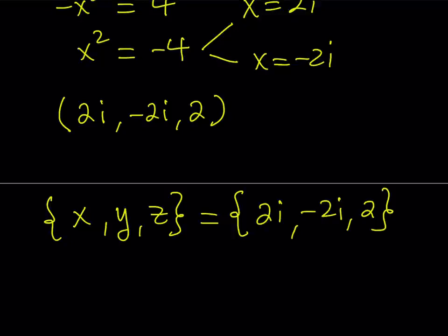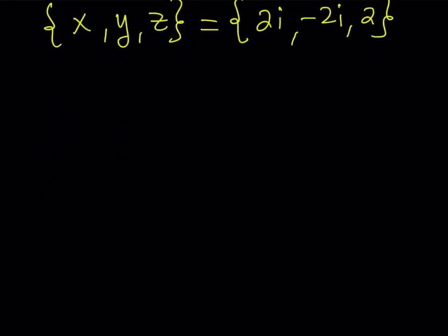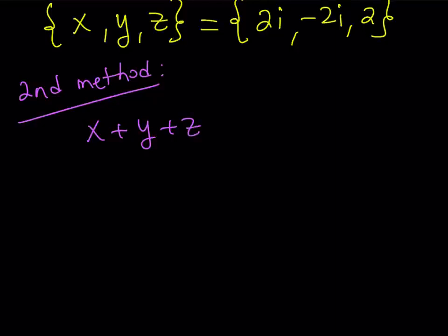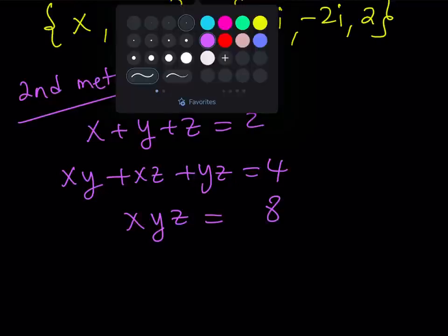This is the end of the first method. Let's take a look at the second solution method — I think you will like both methods. Please let me know in the comments what you think about each method. The second method is pretty interesting — let me go ahead and rewrite my system to refresh our memories. The second method uses what's called Vieta's formulas. I do have separate videos on Vieta's formulas, which I'll link in the description.